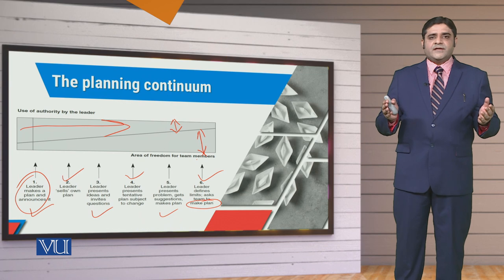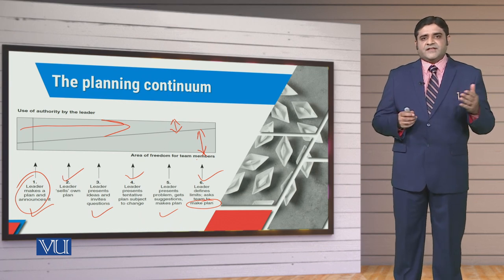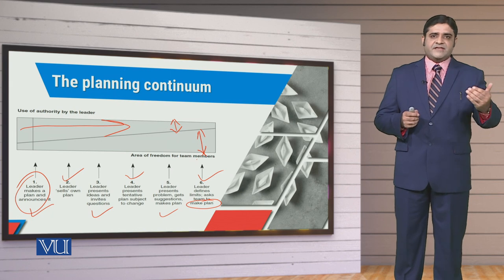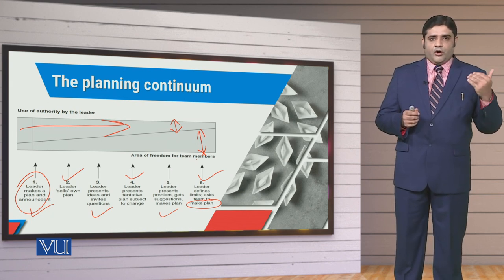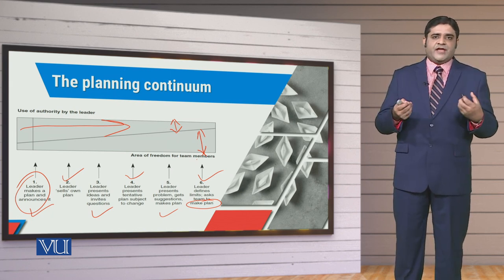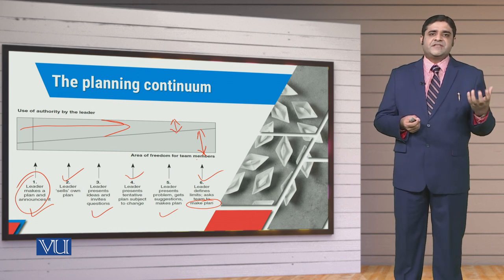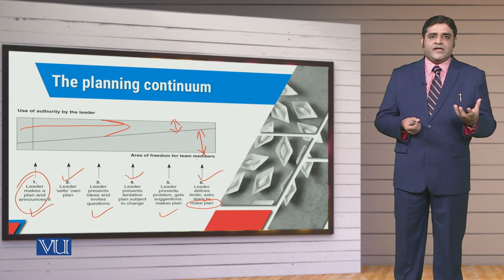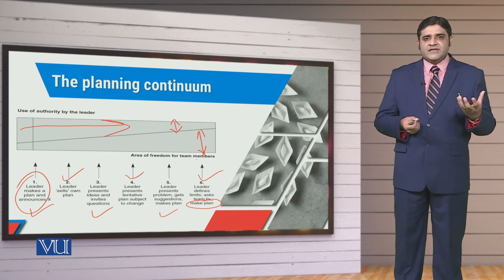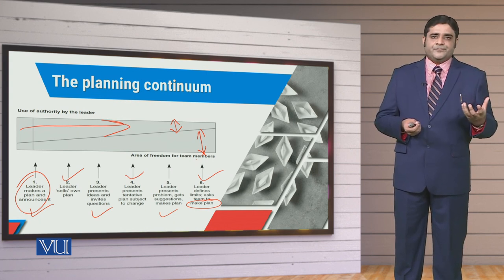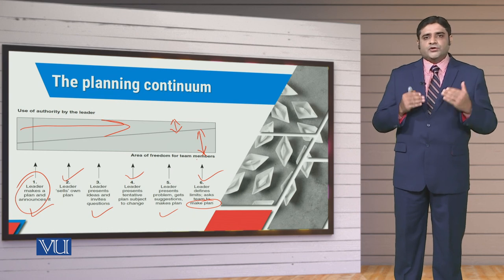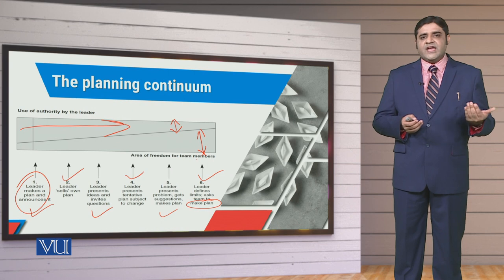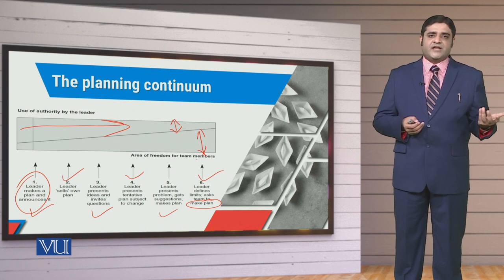Is planning continuum mein hum ne dekha ke kis tarha wakat ke saath leader ki authority or leader ki power, it is getting on the lower side. Aur jo followers ka participation hai, unka jo contribution hai, it is increasing. Yehaan par yeh baat sochni bohot ahim hogi ke follower mein readiness, ableness, willingness woh kis qadar hai. Aur agar woh able and willing honge, to tabhi woh behter contribute kar saken ghe. Otherwise ho sakta hai ke aap ko telling or selling style use karna pade.